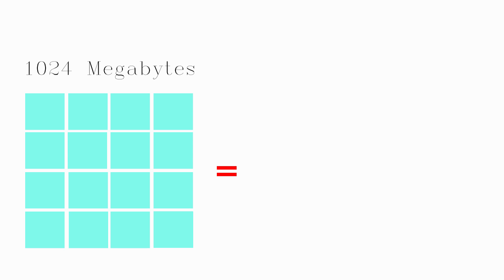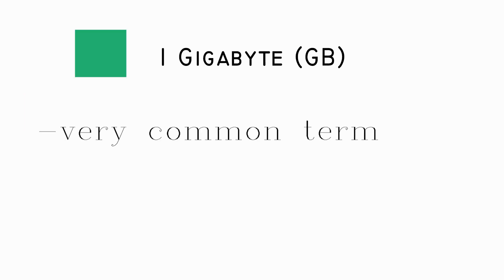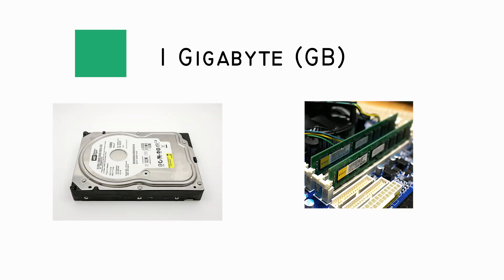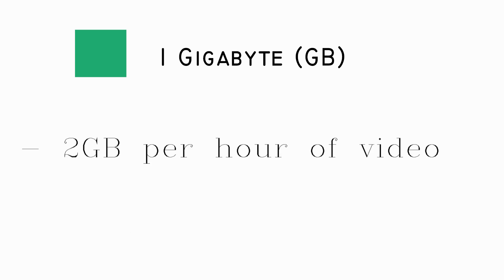A thousand megabytes is called a gigabyte. Gigabyte is still a very common term used these days when referring to document space or drive storage. An ordinary computer might have 8 gigabytes of RAM and 750 gigabytes of persistent storage. A flash drive might hold 32 or 64 gigabytes. A hard drive might hold 500 or 750 gigabytes. Figure about 2 gigabytes per hour of video, and so on.